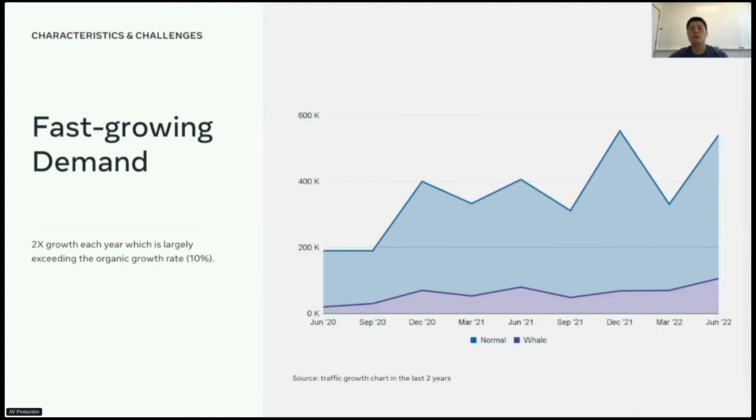But Presto is also facing some challenges handling this workload. The main one is its fast-growing demand. In the last two years, we have observed doubled growth each year, and we are having a hard time to get this much capacity to accommodate this growth, given that it is largely exceeding the organic growth rate. So we had to look into many other ways to support this workload.